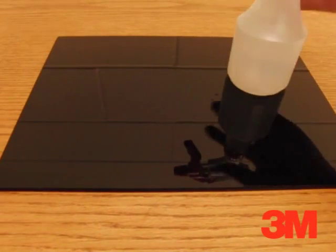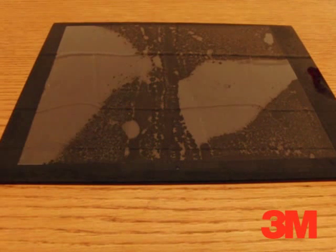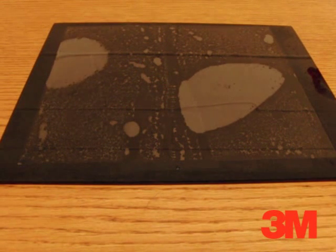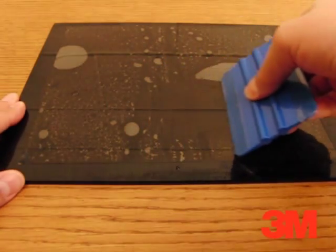For the wet apply method, simply spray the substrate with water, then apply the adhesive. Now use a squeegee to force the water out.